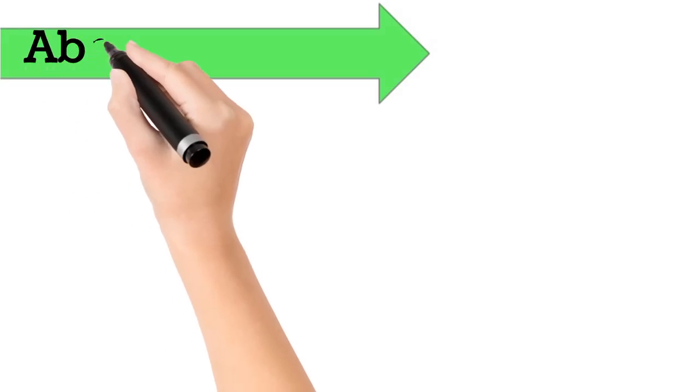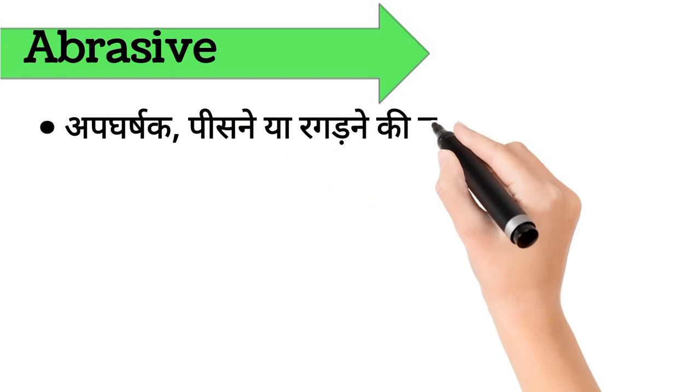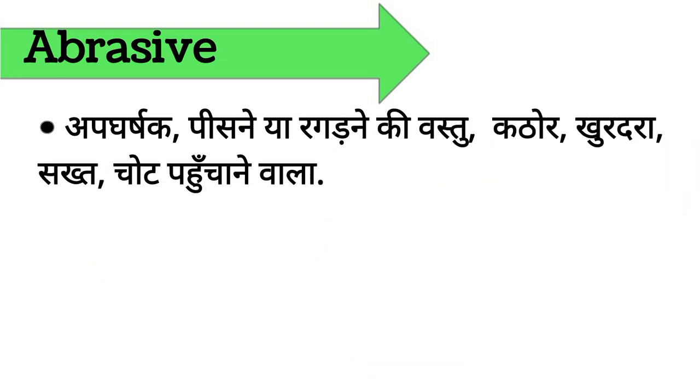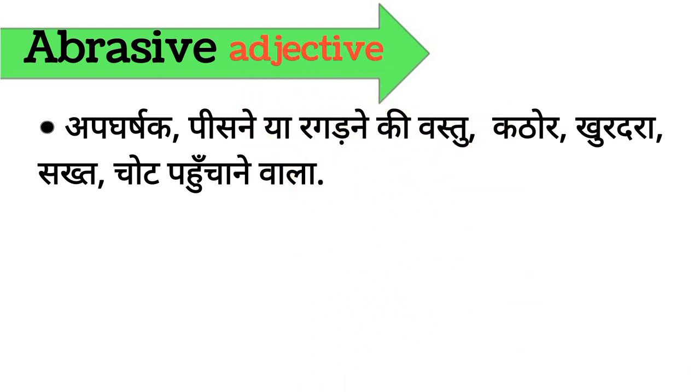Abrasive. Abrasive ka arth hai, gharashik, paesne ya ragarni ki vasdu, kaathor, khurdara, sakht, chodh pahunchane waala. Abrasive word adjective form mein aata hai. It's also called, rough and likely to scratch.